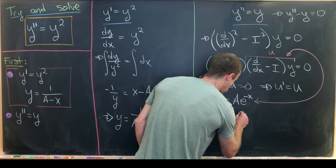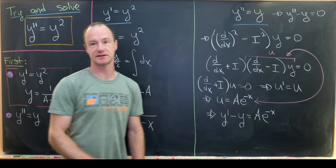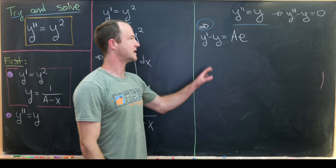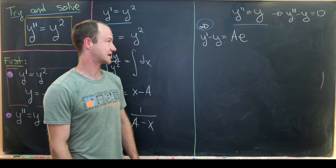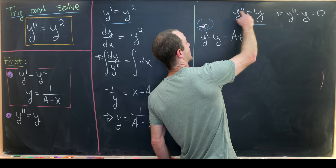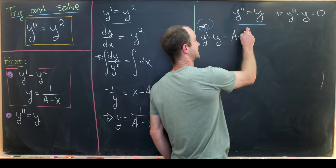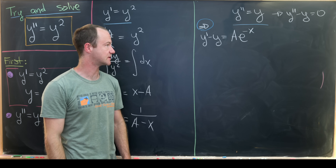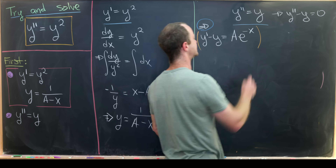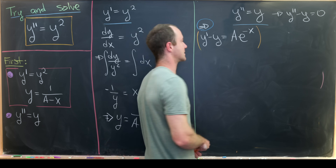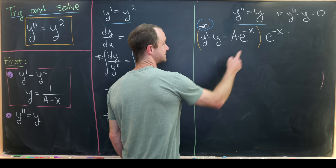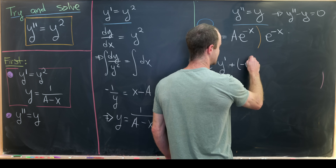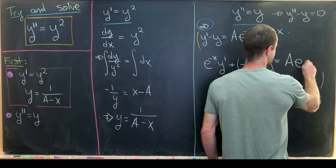Applying separation of variables gives us u equals a times e to the minus x. Looping this back into the fact that u satisfies (d/dx − I) on y equals u, we get a new differential equation for y: y prime minus y equals a times e to the minus x. So we've essentially reduced the order of this differential equation. From here we multiply by an integrating factor, which is e to the minus x, giving us e to the minus x times y prime plus negative e to the minus x times y equals a times e to the minus 2x.